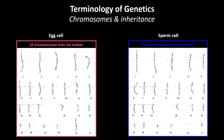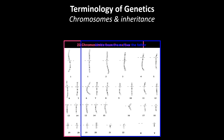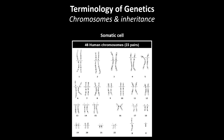After meiosis, an egg cell will contain 23 chromosomes from the mother, whereas the sperm cell will contain 23 chromosomes from the father. When a sperm cell and an egg cell fuse, the resulting zygote contains half of the chromosomes from the father and half of the chromosomes from the mother. This cell can now grow into a new organism.